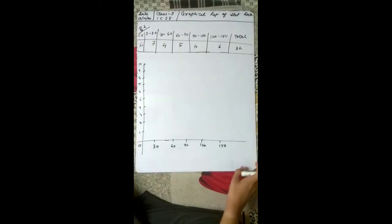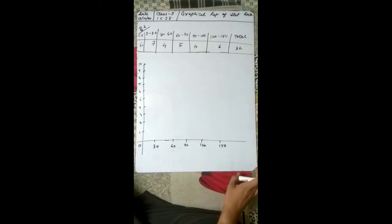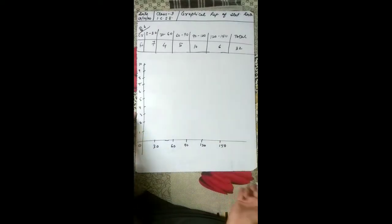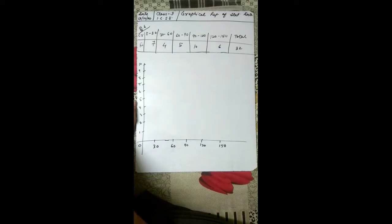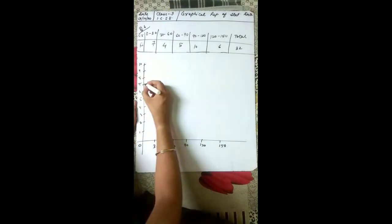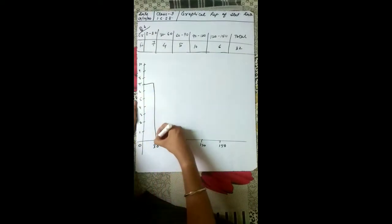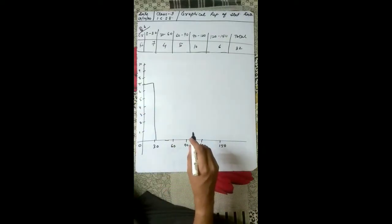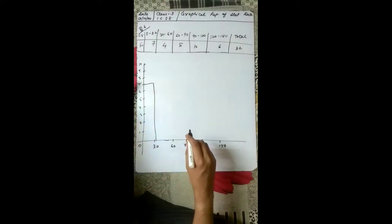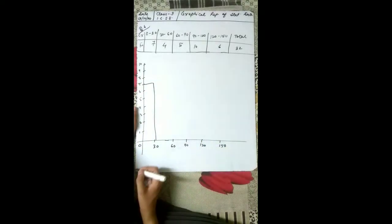Here is the question: draw the histogram and the frequency polygon in the same figure for the following distribution. In the same figure, we need to draw two things — histogram and frequency polygon. The data is as follows. We have 0 to 30 with frequency 7. You have to draw this on graph paper — please make sure you don't draw on plain paper; use a graph copy or graph page. In between 0 to 30, you have 7, so the first bar has been made.